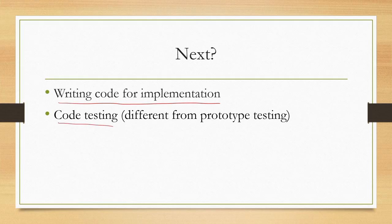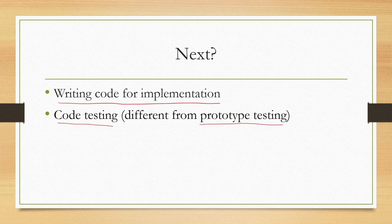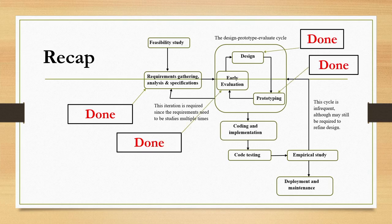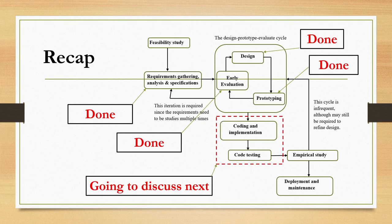Earlier we talked about testing of the interface in terms of building prototypes and getting them tested with domain expert users. Here, what we are going to talk about is testing of the code — after we have written the code to implement the system, we are going to test the code. That is clearly different from testing of the prototype. So we are now going to focus on the next two stages: coding and implementation, and code testing.